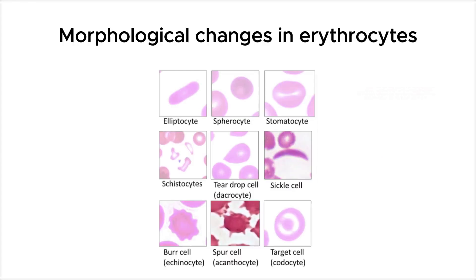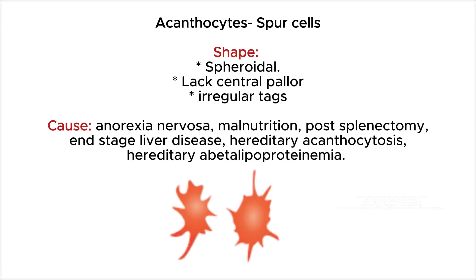Life under microscope: morphological changes in erythrocytes. In this video we will talk about the morphological changes in erythrocytes such as acanthocytes, echinocytes, elliptocytes, spherocytes, stomatocytes, schistocytes, teardrop cells, and sickle cells. Acanthocytes are spheroidal and lack central pallor.